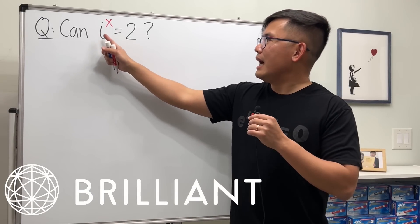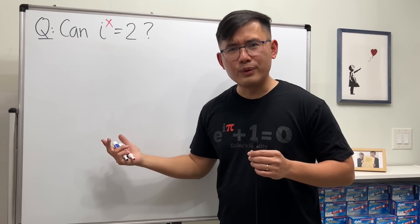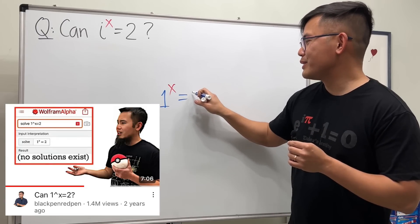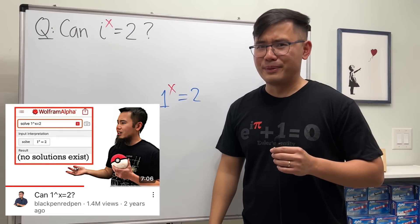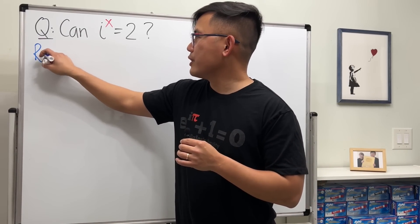Today we are going to figure this out: i to the x power equals 2. How is this possible? Well, last time I showed you 1 to the x power equals 2 already, so of course that's possible, right? Before I show you this, I'd like to recall a question we have done before.